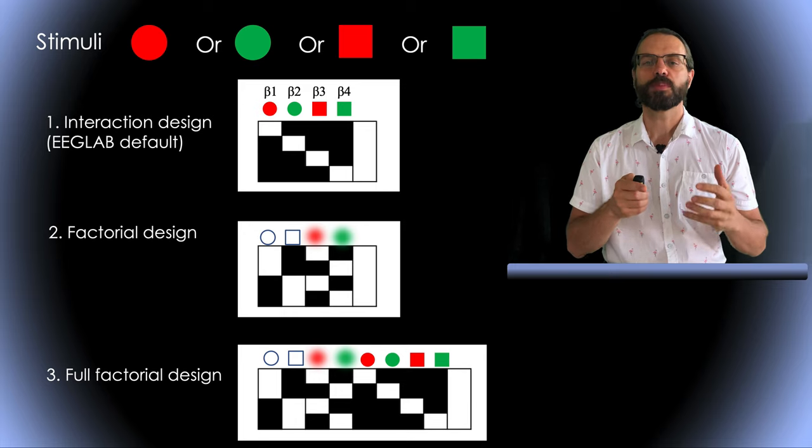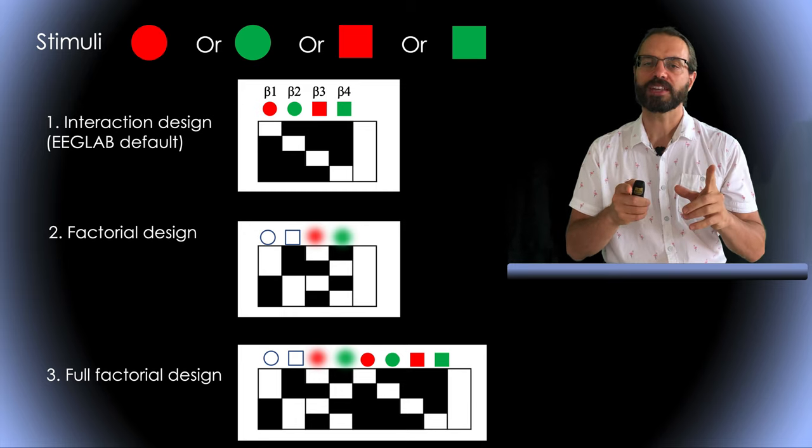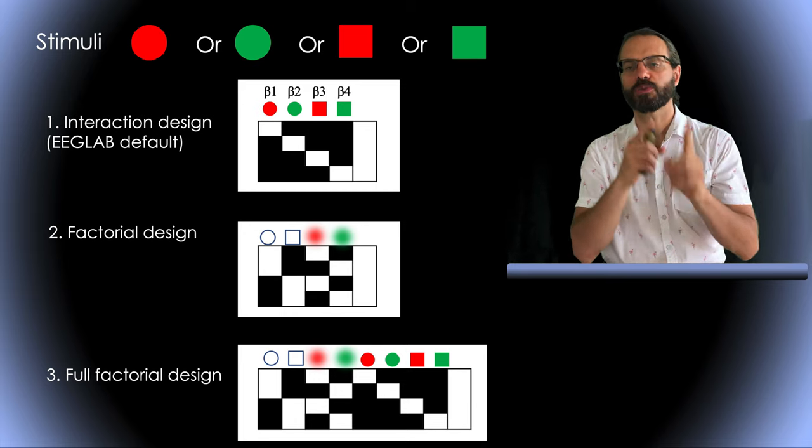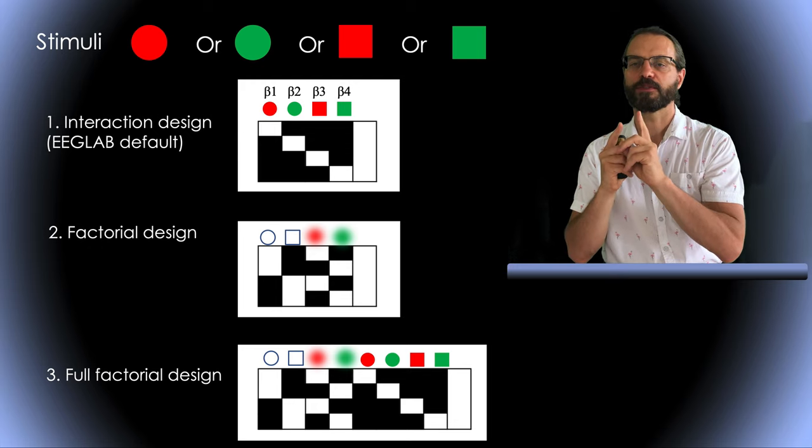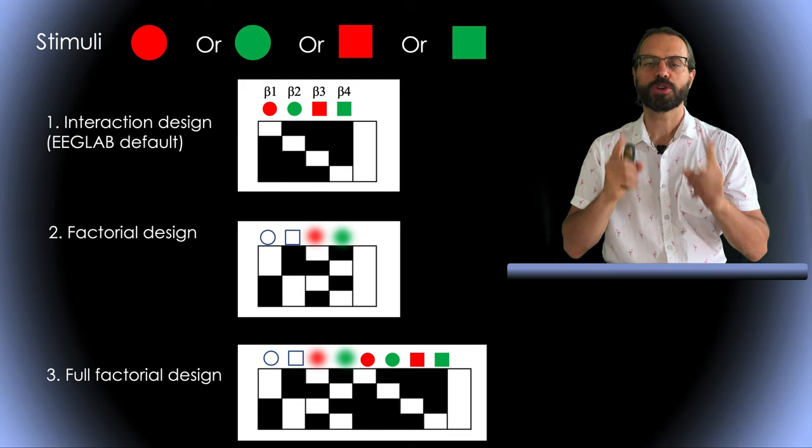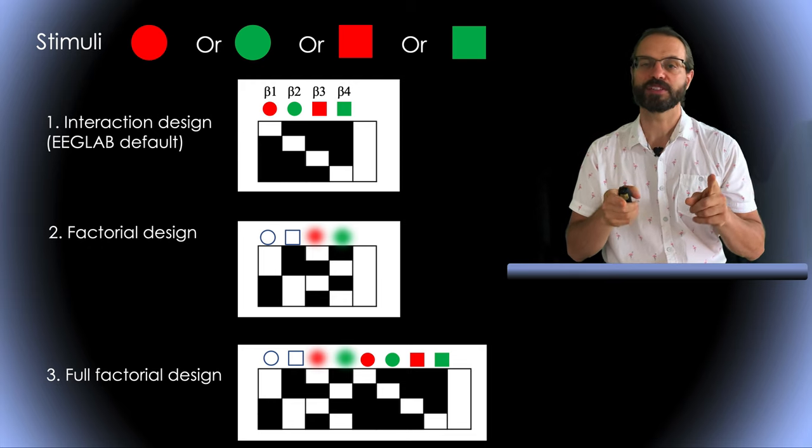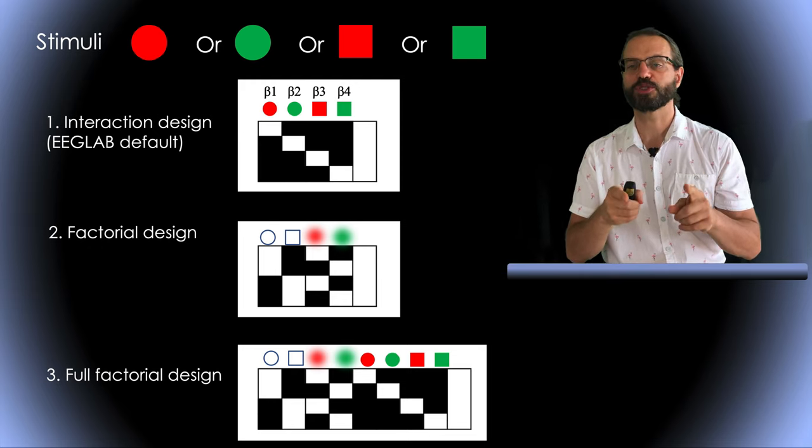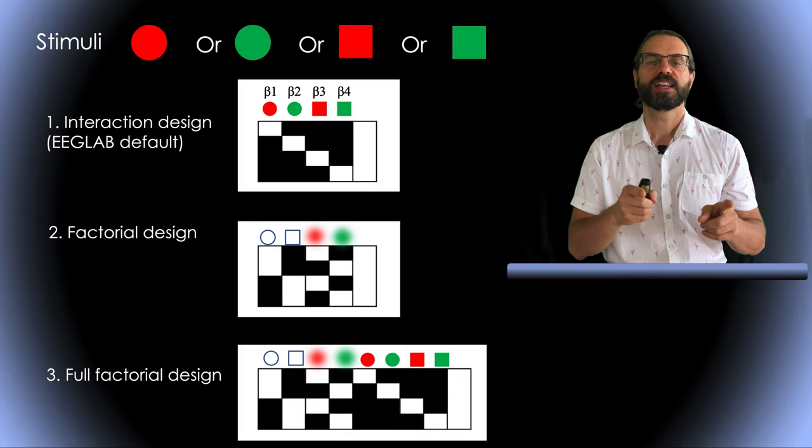Alternatively, you can model it differently with one beta for square, one beta for circle, one beta for green, and one beta for the red color. This is called a factorial design. Now, square versus circle is beta1 minus beta2 and red versus green is beta3 minus beta4. This type of design is rarely used but still valid.